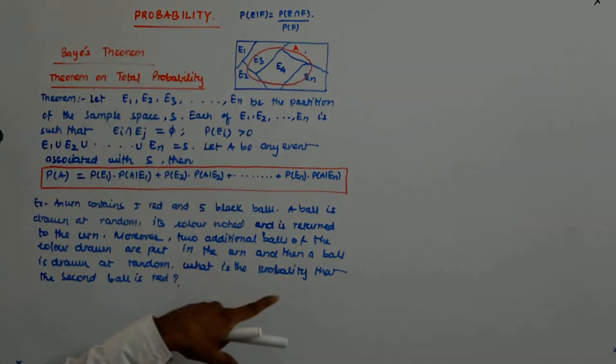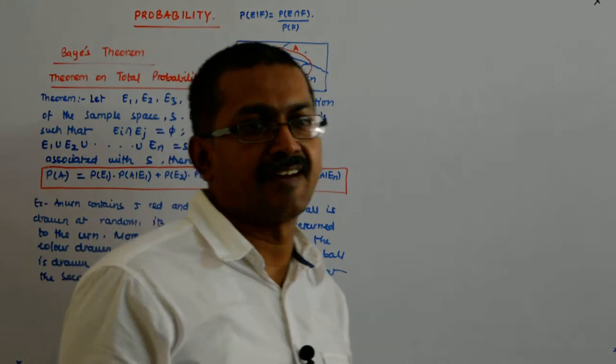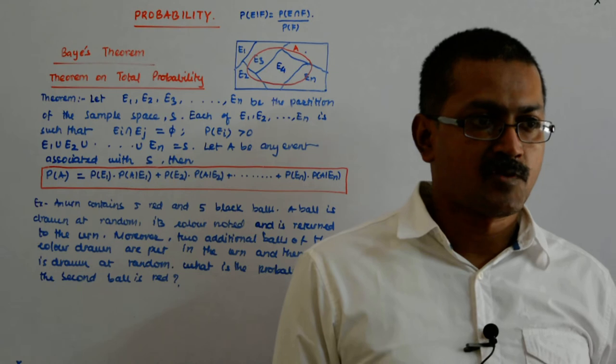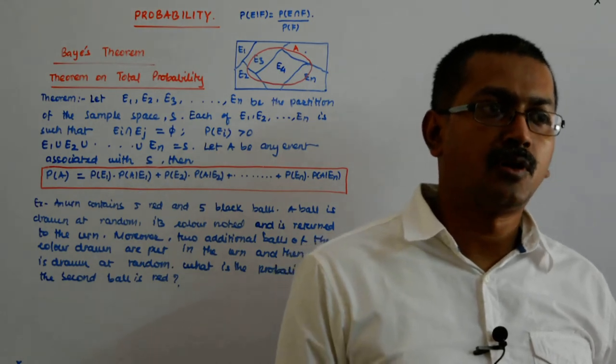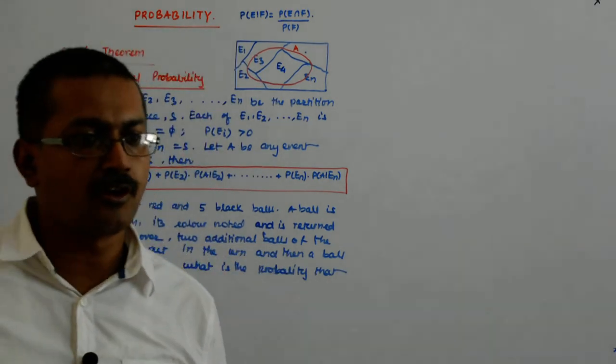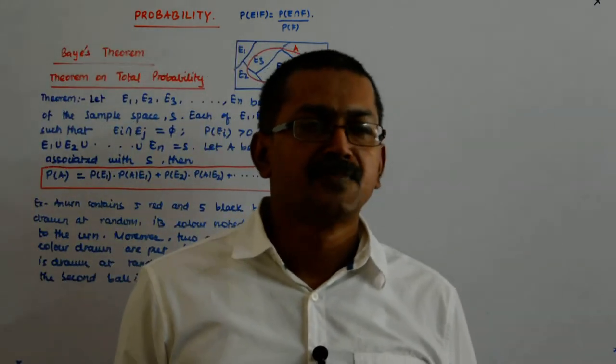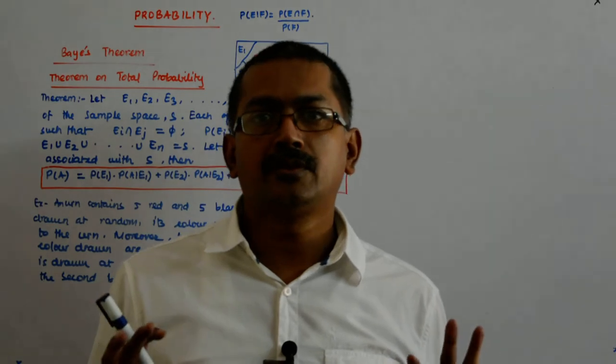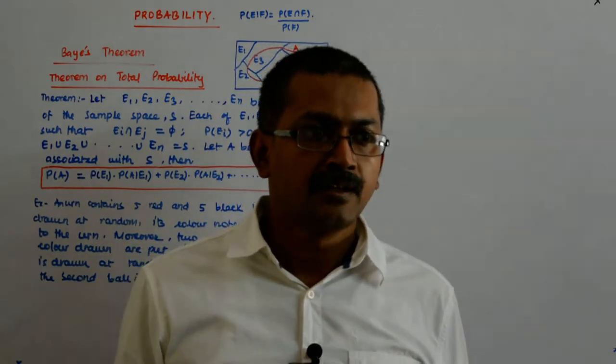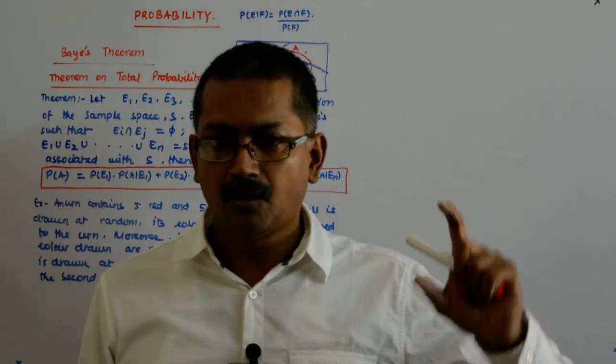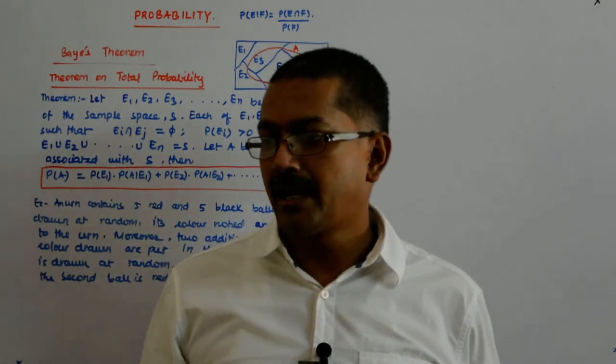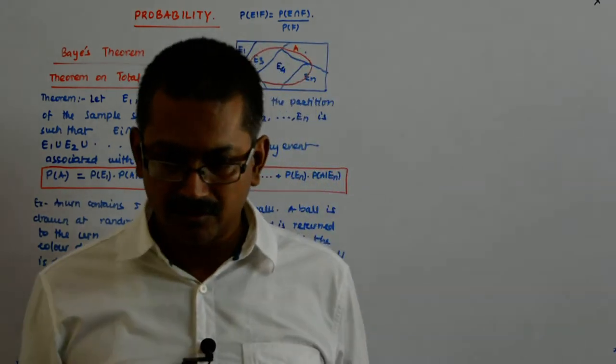What is the probability that the second ball is red? Now, this will fox you. This will fox you a lot, this question. What happens? There are simply two ways in which the thing can be done. Either the first ball drawn was red or the first ball drawn was black. And according to that, the probabilities will change.